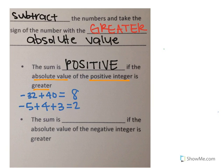What happens if the absolute value of the negative integer is greater? In that case, the sum is negative if the absolute value of the negative integer is greater.